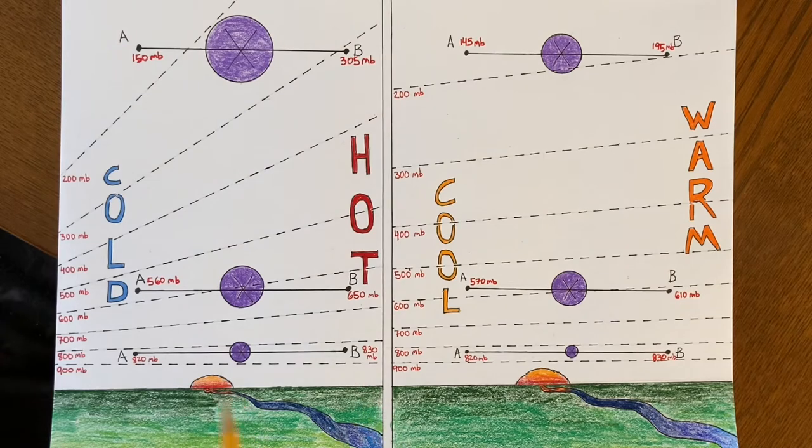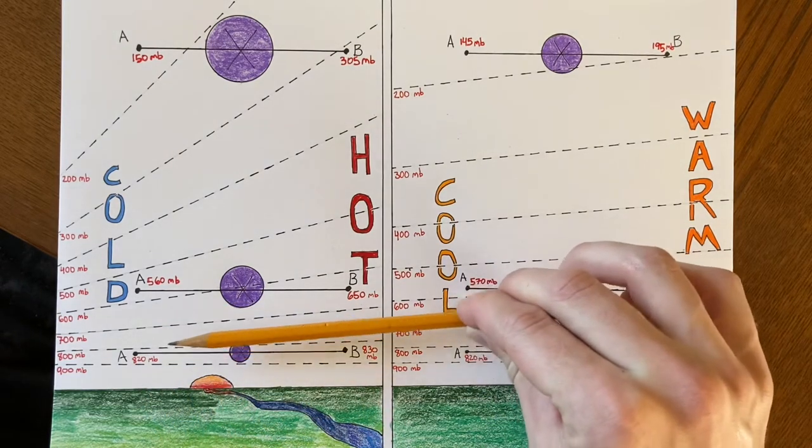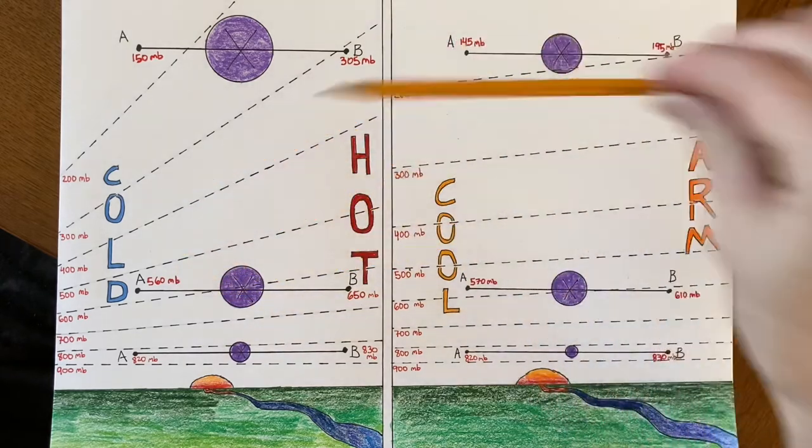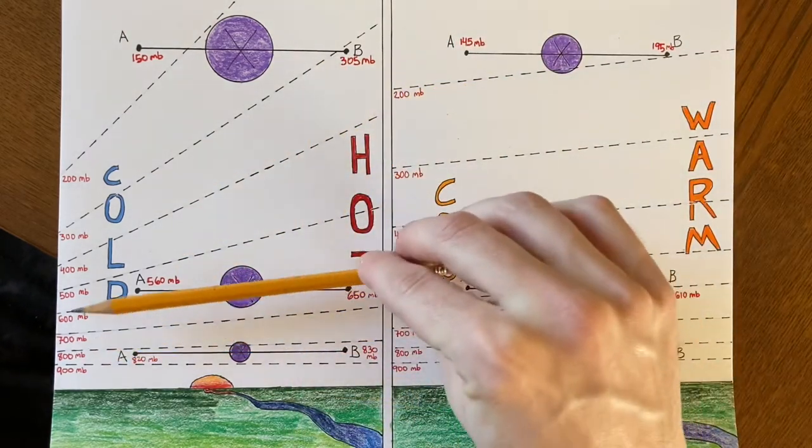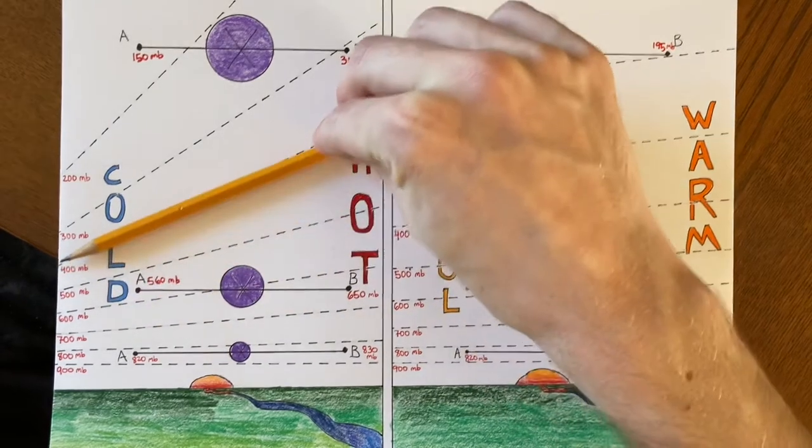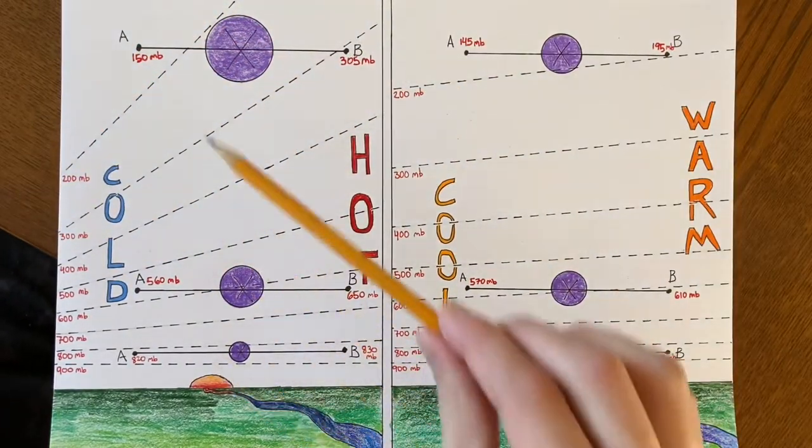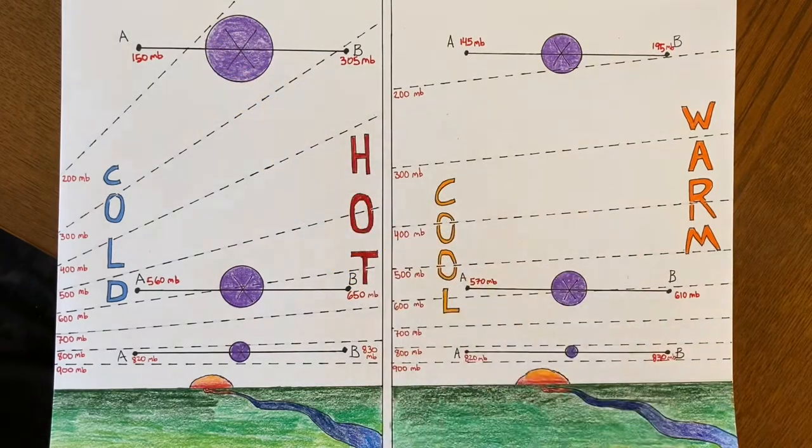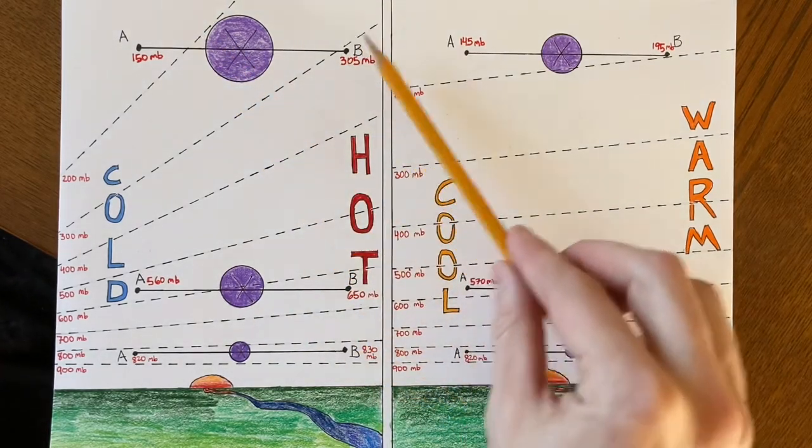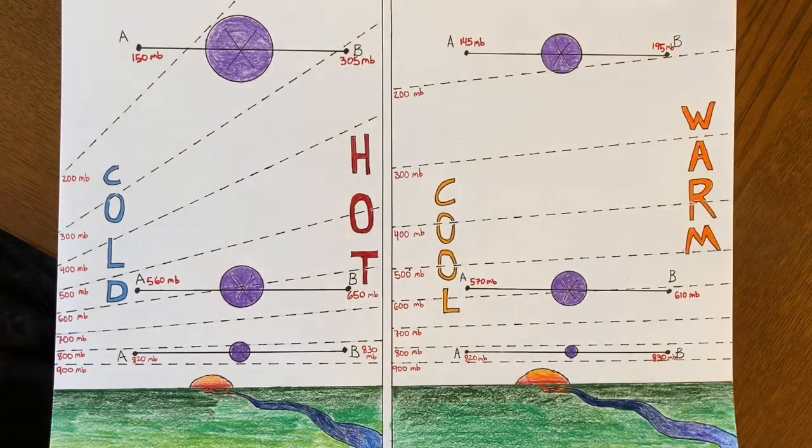Down near the surface, it's not very dramatic. But because the spacing is greater between the pressure levels in this hot air over here, as you go up, these pressure lines tilt more and more and more. So by the time you get to the upper levels of the troposphere, the slope of the pressure levels is pretty steep.